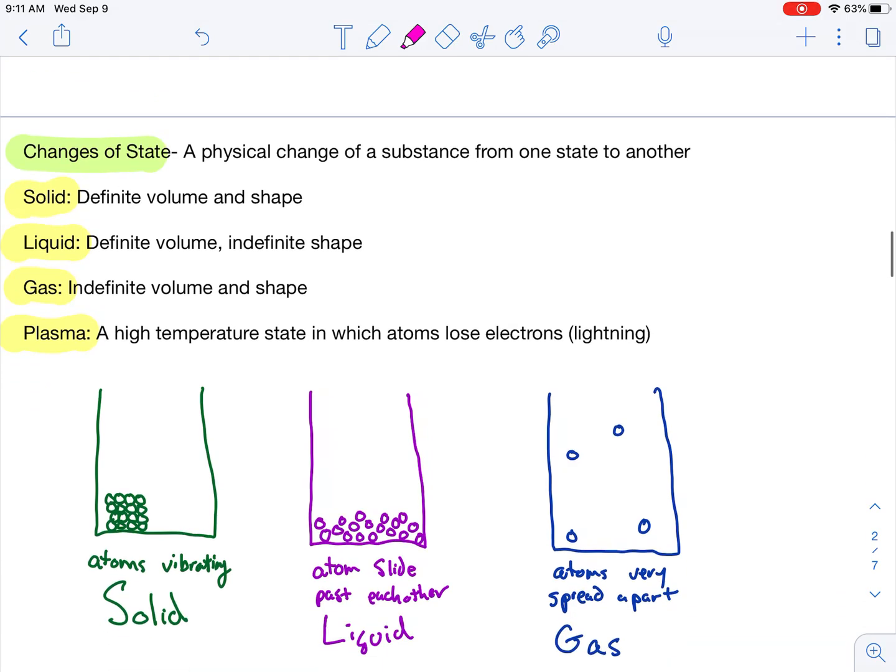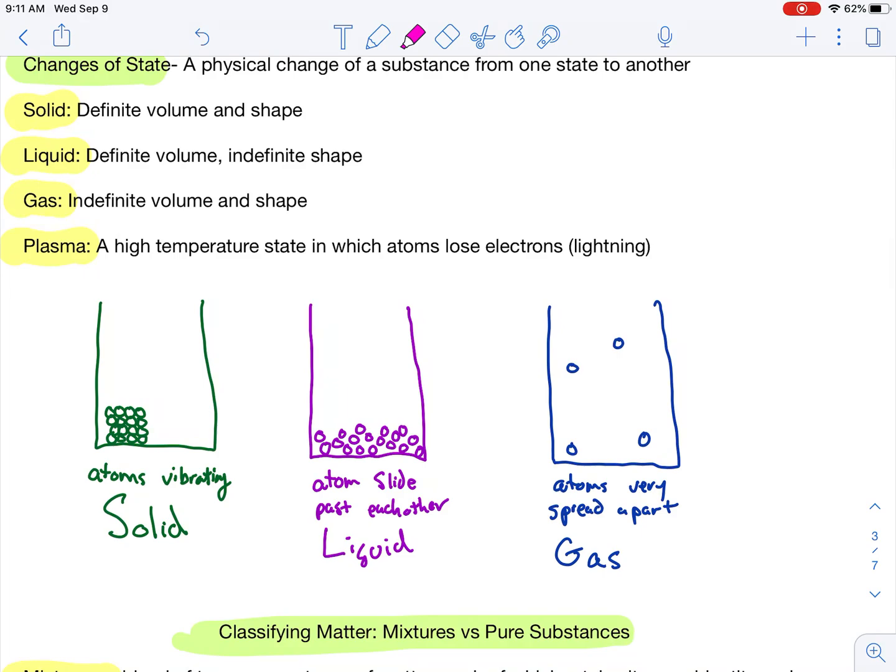We have four states of matter, and I want you guys to know a little bit about them. We have solid, liquid, gas, and plasma. Plasma, we're going to spend very little time on, so don't worry about plasma too much. It's a very high energy state. Atoms lose electrons. It's weird. Lightning's an example. So, don't worry too much about plasma.